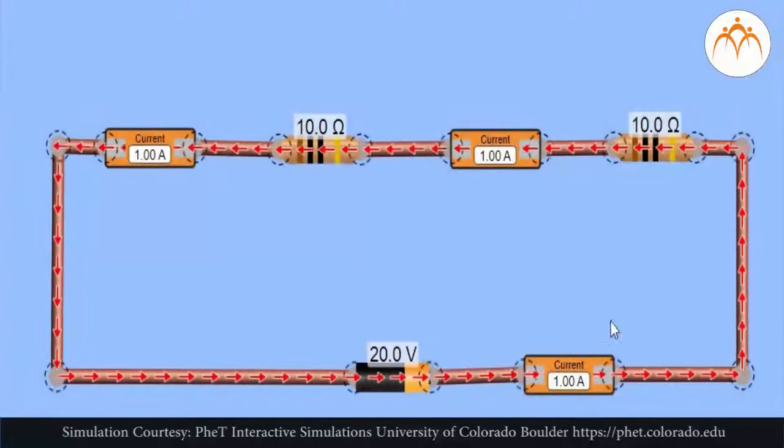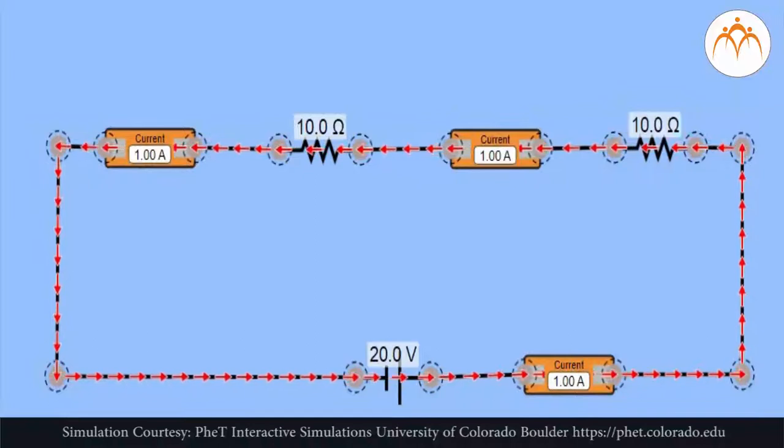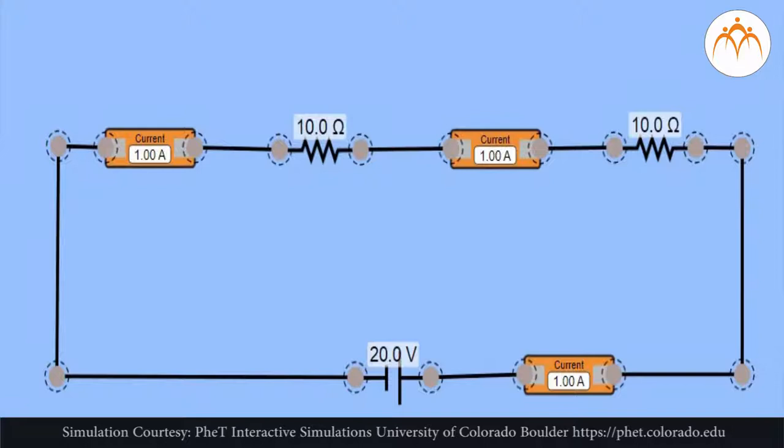A 20 volt cell will establish an electric potential difference across the external circuit of 20 volts. This is to say that the electric potential at the positive terminal is 20 volts greater than at the negative terminal.